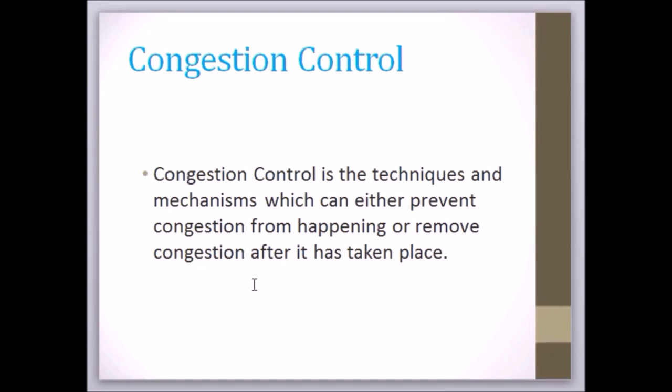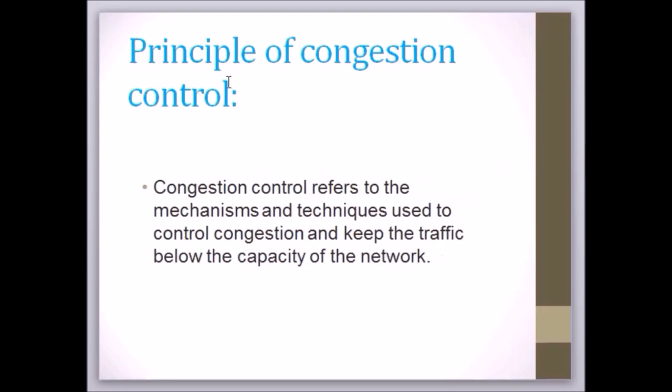Congestion control mechanisms are divided into two categories. One category prevents congestion from happening and the other category removes congestion after it has taken place. The basic principle of congestion control refers to the mechanism and technique used to control congestion and keep the traffic below the capacity of the network. That is the basic objective of congestion control.